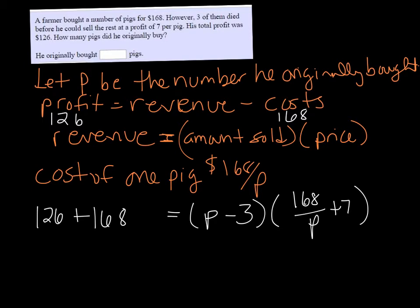So revenue is going to equal profit plus the cost. $126 plus $168 is $294. And if we FOIL the right side, we're going to get $168 plus 7P minus $504 over P minus $21.